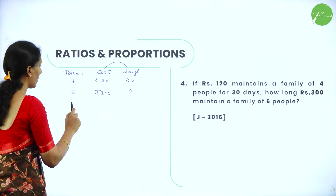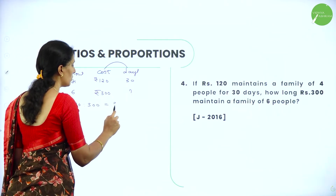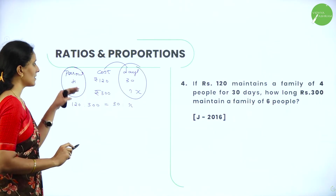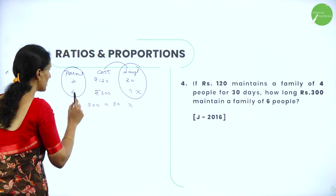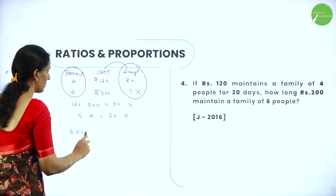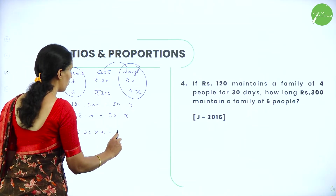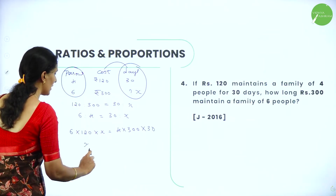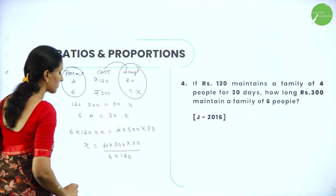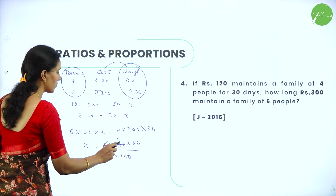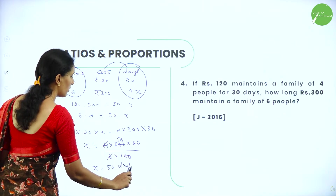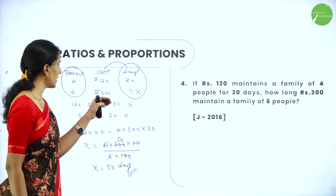Cost and days are directly proportional: 120 is to 300 equals 30 is to x. Persons and days are inversely proportional — as the number of persons increases, days decrease. So: 6 is to 4 equals 30 is to x. Hence I write: 6 into 120 into x equals 4 into 300 into 30. Therefore x equals 4 into 300 into 30 divided by 6 into 120. Cancelling, we get x equals 50. So rupees 300 can maintain a family of 6 people for 50 days.